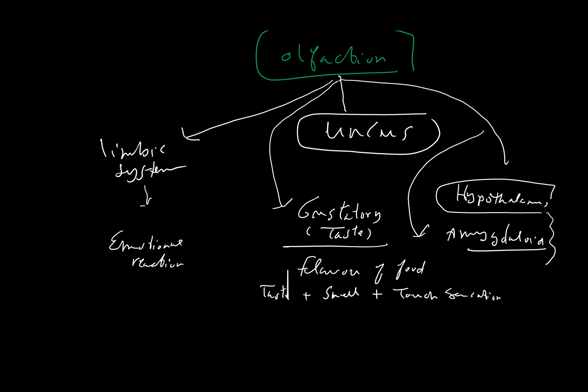In summary: the olfactory pathway involves the division of olfactory fibers into three striae at the trigone. Injury before this division causes ipsilateral loss of smell; injury after causes bilateral loss. Smell is related to emotional reactions and is more complex than just perception. Thank you.